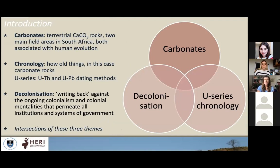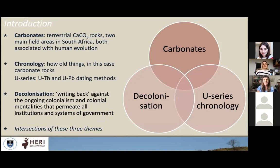Carbonates — the terrestrial carbonates I work on are basically made of calcium carbonate. I work in two main areas in South Africa, both associated with early human evolution. The other main part of my research is chronology — working out how old things are — and the technique I use is uranium series dating, specifically the uranium-thorium and uranium-lead chronometers. My research sits at the intersection of carbonates and the U-series chronometer.